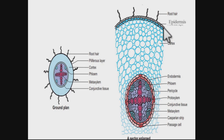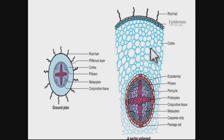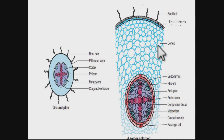The cortex is below the epidermis, extending till the endodermis — the innermost layer of the cortex is the endodermis. The cortex is multilayered and originates from the periblem of the ground tissue of the apical meristem. All cortical cells are parenchymatous in nature with prominent intercellular air spaces, and collectively they are called the cortex.